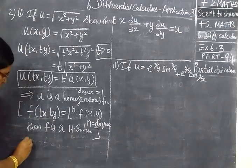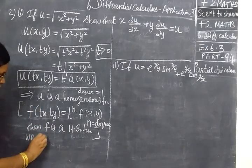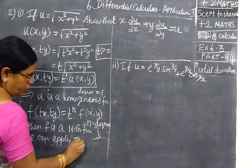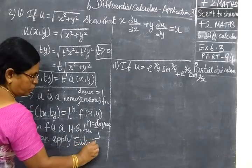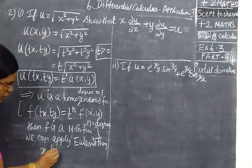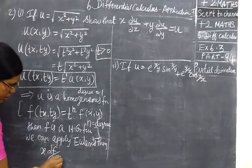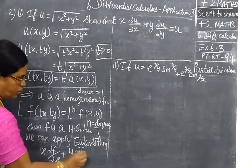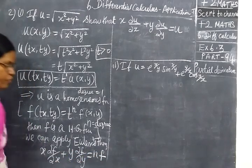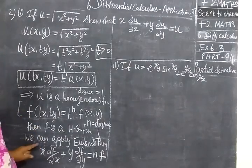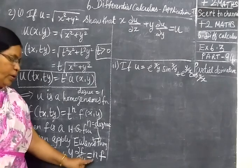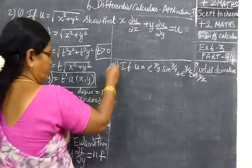So if f is a homogeneous function, we can apply Euler's theorem. By Euler's theorem: x into partial f by partial x plus y into partial f by partial y equal to n times f, where n is the degree.